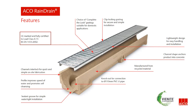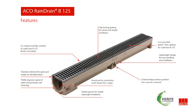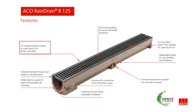Next in the range, using the same channel body as Akko Rain Drain, is the Akko Rain Drain B125 channel. It is supplied with a stronger cast iron grating and therefore meets load class B125. It is suitable for installation in driveways and small private car parks where applications require greater load performance than domestic A15 products. If you have Akko Rain Drain already installed and want to upgrade to Rain Drain B125, we have a selection of cast iron grates available in our complete-the-look range. Key features include a cast iron heel guard ATEC rating for load class B125, CE marked and fully certified to load class B125.